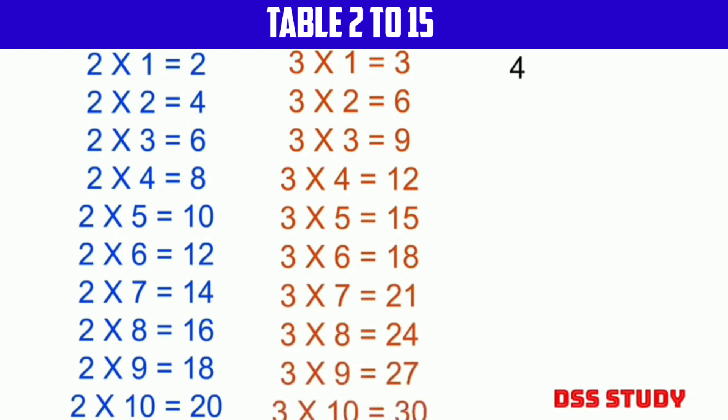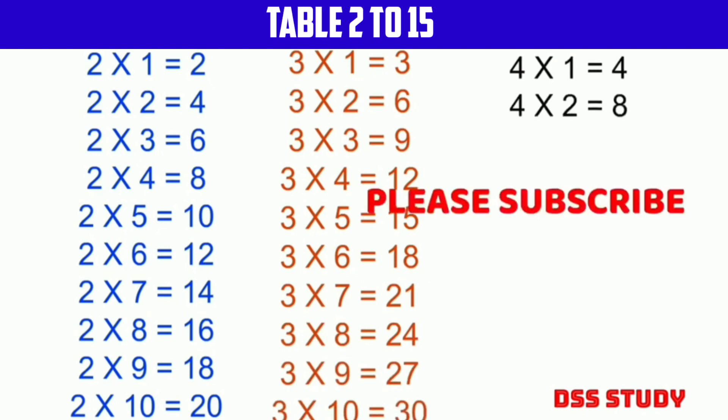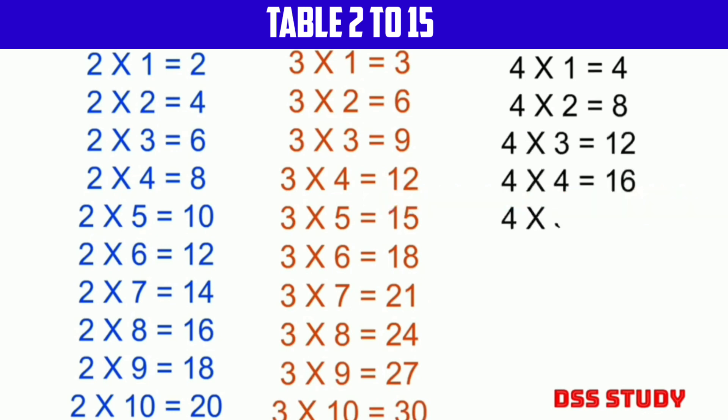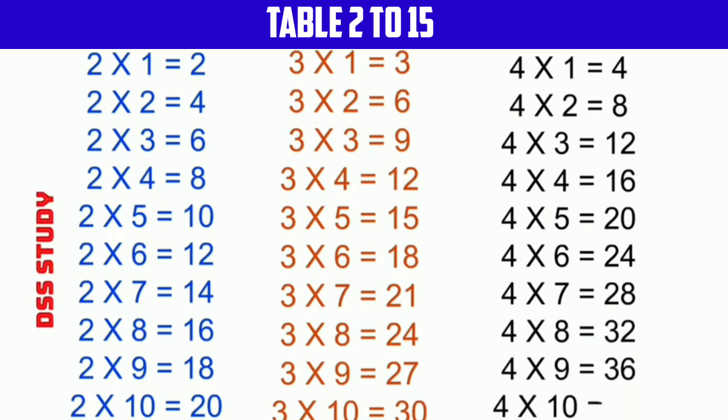4 times 1 is 4, 4 times 2 is 8, 4 times 3 is 12, 4 times 4 is 16, 4 times 5 is 20, 4 times 6 is 24, 4 times 7 is 28, 4 times 8 is 32, 4 times 9 is 36, 4 times 10 is 40.